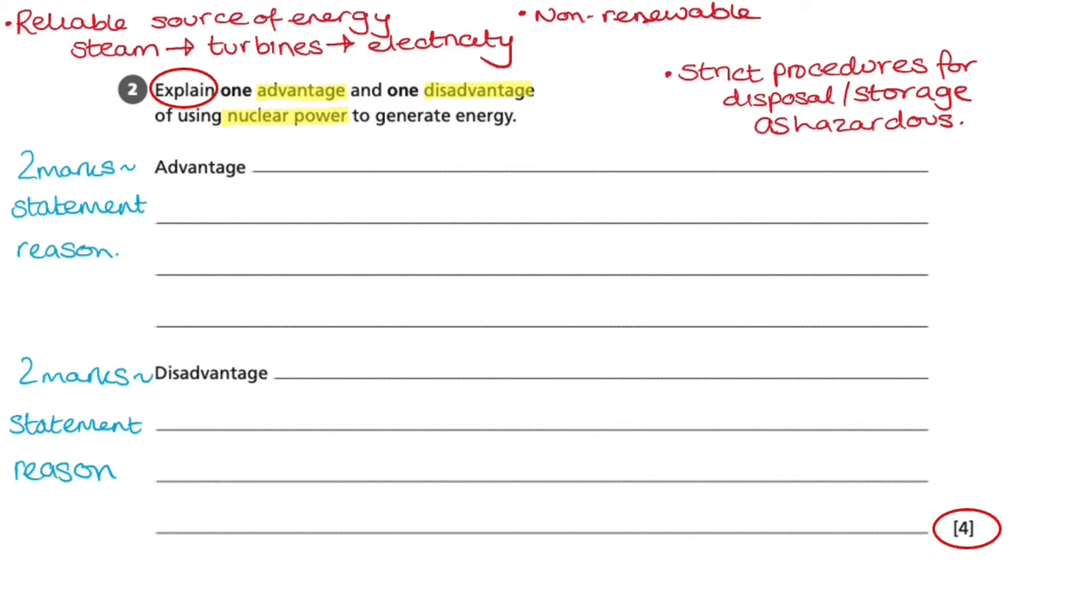I also know that there are strict procedures for the disposal and storage of waste as nuclear materials can stay hazardous for thousands of years. As I have been brainstorming what I know about nuclear power, I have written some notes around the question on the exam paper. I have now also highlighted the positives green and left the two negatives or disadvantages red. This has helped me to collect my thoughts ready to write my answers.